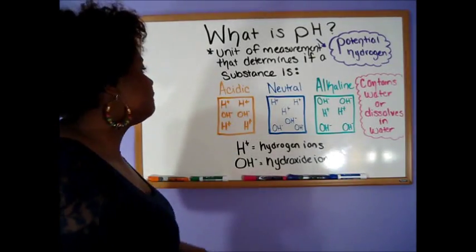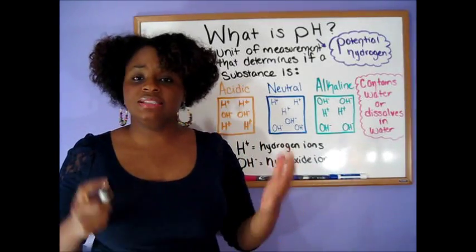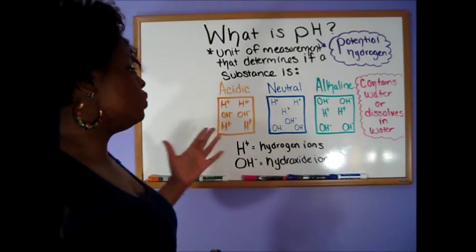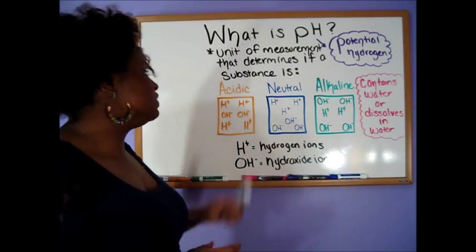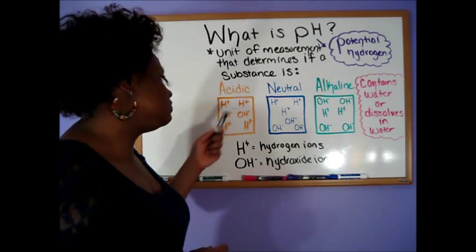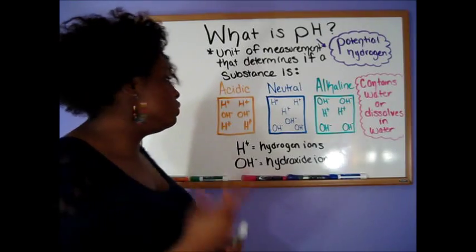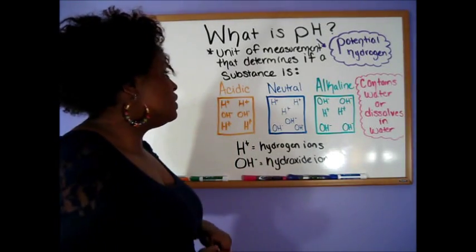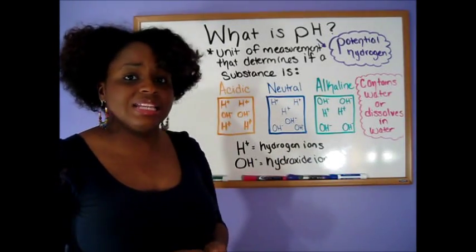When a particular solution is acidic, it usually means that solution has more hydrogen ions than hydroxide ions, which is why I have the H plus H plus H plus, and for the hydroxide I have two OH minuses in this solution, which as I said, if it has more hydrogen ions, it means that it's acidic.